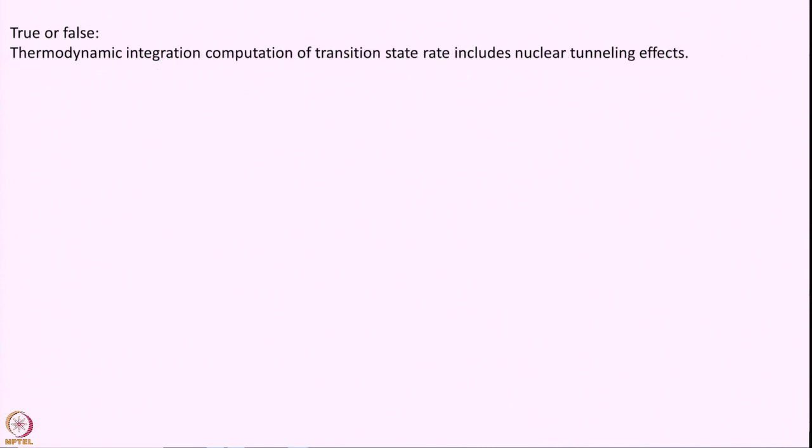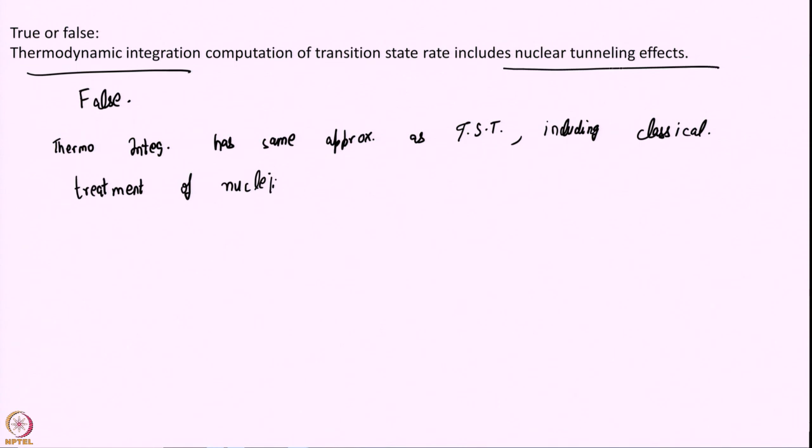True or false? Thermodynamic integration computation of transition state rate includes nuclear tunneling effects. Again, take your time, think about it and answer true or false. The correct answer is false. Thermodynamic integration is still treating nuclei classically. Thermodynamic integration has the same approximations actually as transition state theory of nuclear. So nuclear tunneling effects are not included.